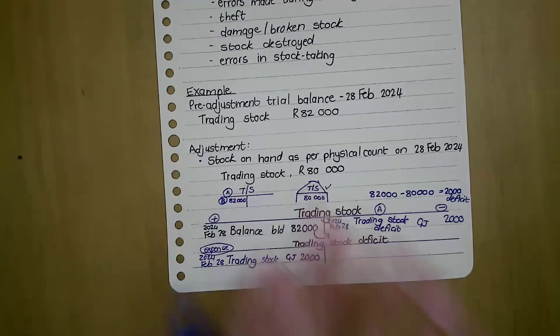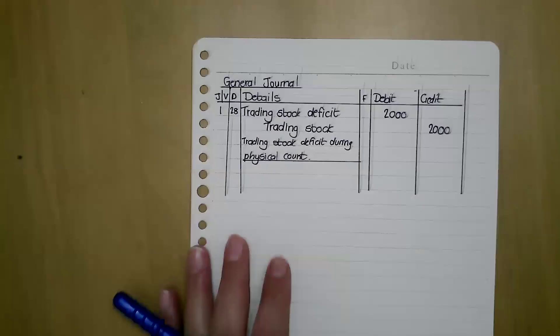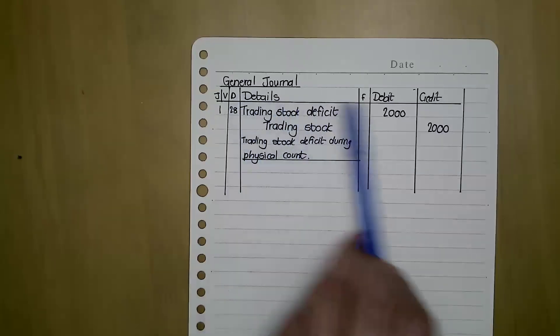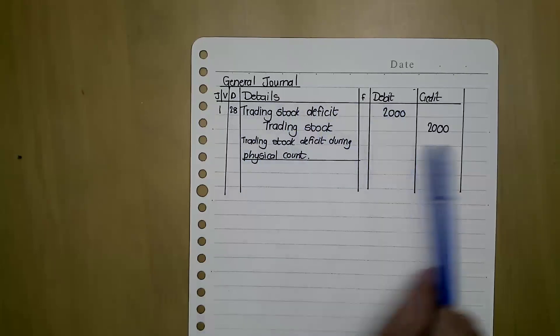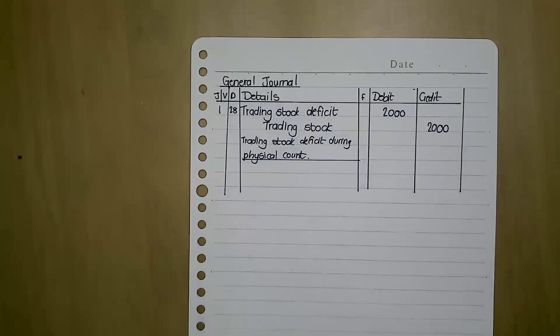If we have a look at our general journal, your general entry will look as follows: debit trading stock deficit 2,000, credit trading stock 2,000. Your narration is a story that tells us what happens: there was a trading stock deficit during physical count.